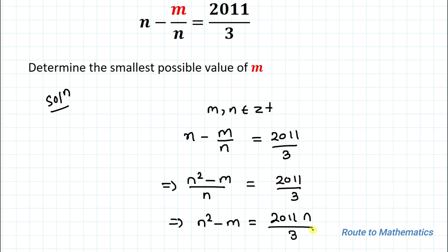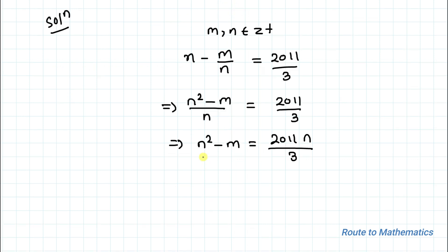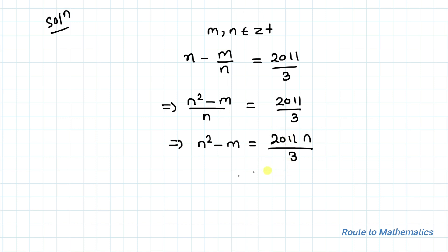By cross multiplication, n squared minus m equals 2011 times n divided by 3. Since m and n are positive integers, n squared minus m must be an integer. Since 2011 is a prime number, n must be divisible by 3 so that the total value becomes a positive integer.